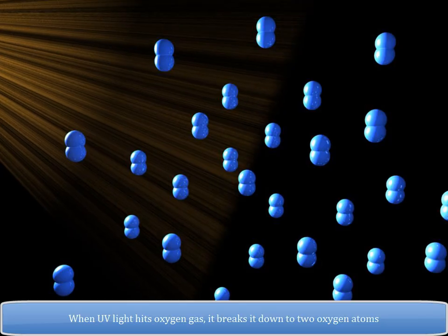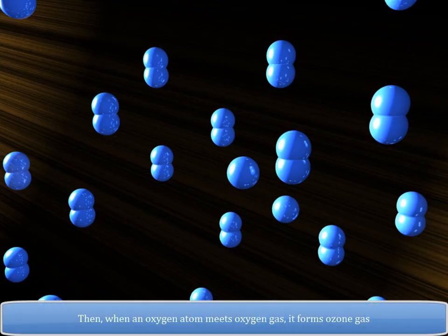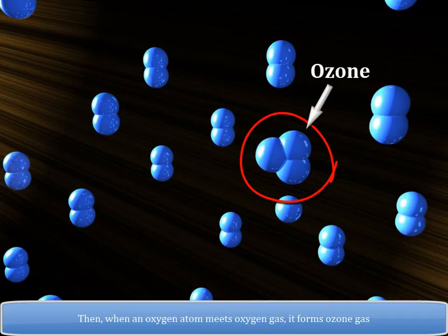When UV light hits oxygen gas, it breaks it down to two oxygen atoms. Then when an oxygen atom meets oxygen gas, it forms ozone gas.